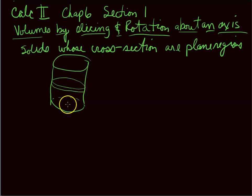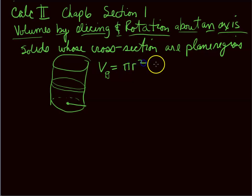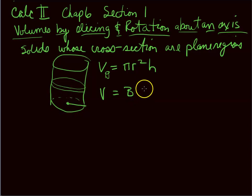How do you find the volume of this cylinder? The volume of a cylinder is the area of the base times the height, or π r² h. More generally, it's the area of that plane region — in this case a circle, π r² — times the height.